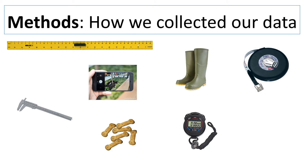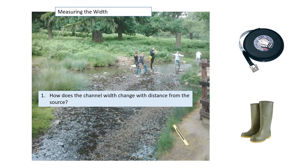To carry out our methods we used a range of different equipment. To investigate the width of the river we used a tape measure — a 25 meter tape measure, which would comfortably be long enough to measure the width of the river. At each site we measured the river from the bank all the way across to the opposite bank. It was important to make sure the tape measure was held tight so that it was measuring accurately.